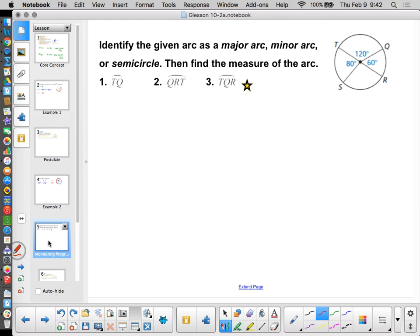Identify as major, minor, or semicircle, and find out the measure of the arc. TQ here, that's pretty straightforward. TQ is this arc, so that's 120 degrees, and that would be minor. QRT goes around like this. It's a whole circle except the 120. It's obviously a major arc, three letters, and it's more than half the circle. And we use up everything but 120, so 360 minus 120 is 240 degrees.